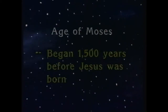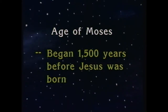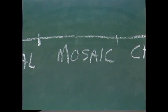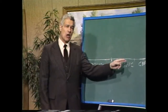Beginning approximately 1,500 years before Jesus was born, we have the age of Moses, the Mosaic dispensation. And then we have the age of Christ. Of the thousands of years of human history, the 1,500 years of Mosaic law was only a relatively small part, and yet, unfortunately, we get our view of God from the law.